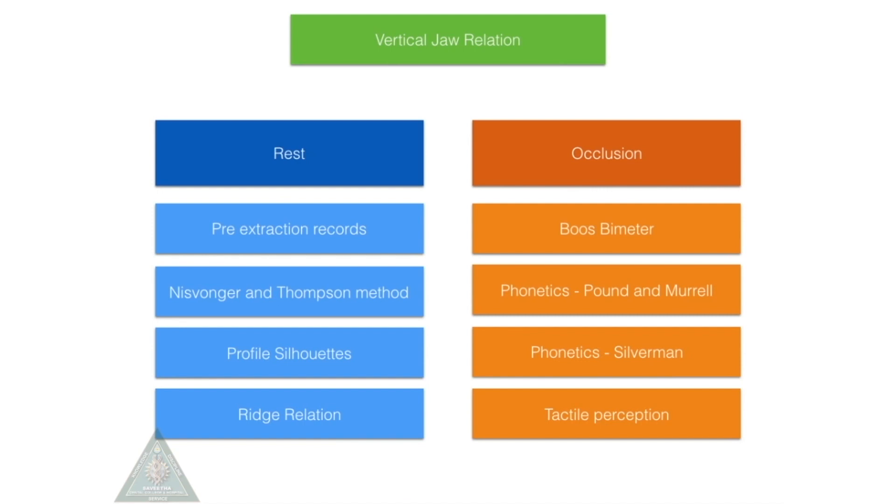Next is vertical dimension at occlusion. Vertical dimension at occlusion can be calculated with the help of the Boos bimeter. It is basically a central bearing device with two plates, one attached to each occlusal rim, and there's a pin in between.